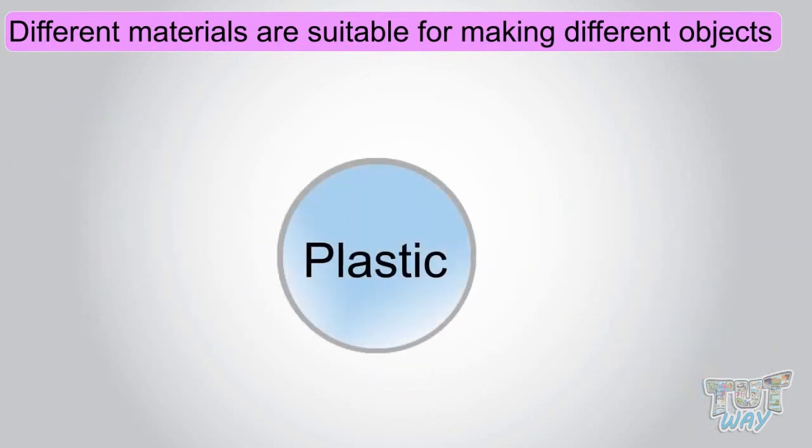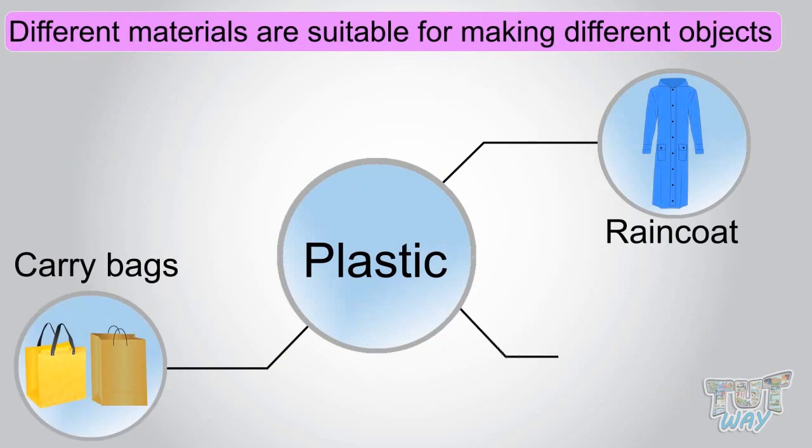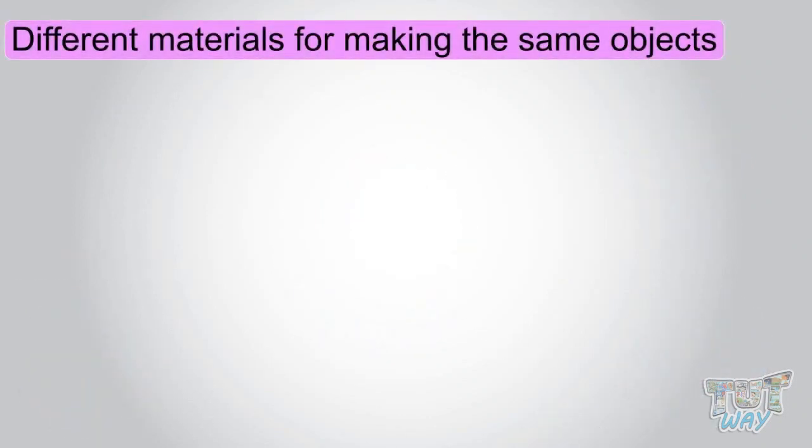Plastic is suitable for making raincoats, carry bags, and small water bottles. We can use different materials for making different objects. Like a chair can be made up of different materials.